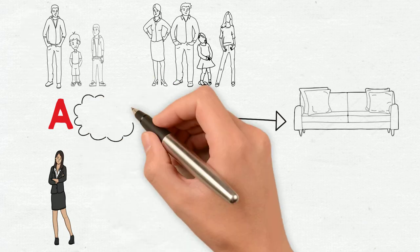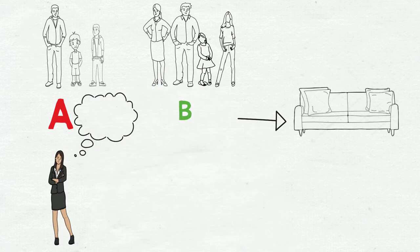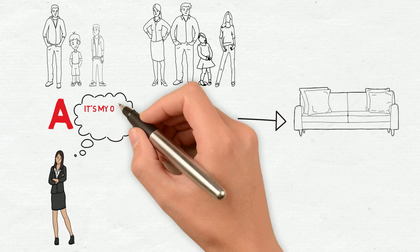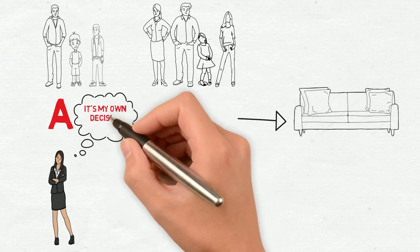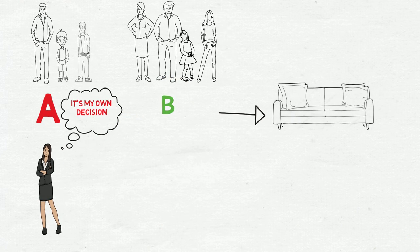In Family A, it was the mother who chose the color of the sofa, the type, the size, and the brand. For the mother, these kinds of decisions concern only the female head of the family, which is her.